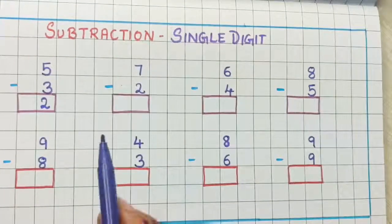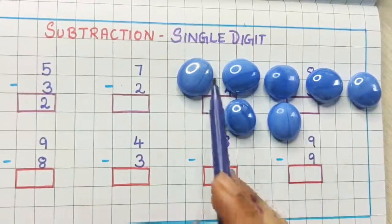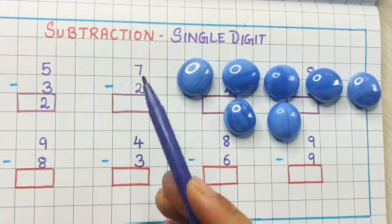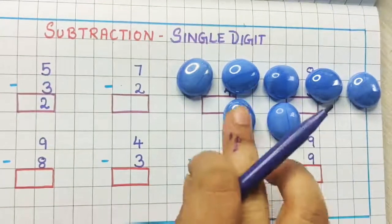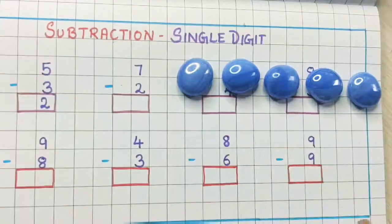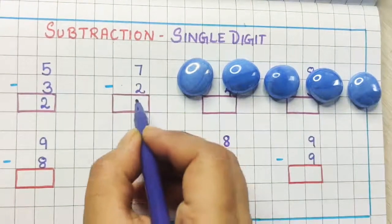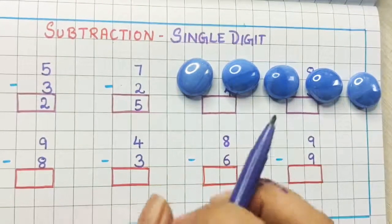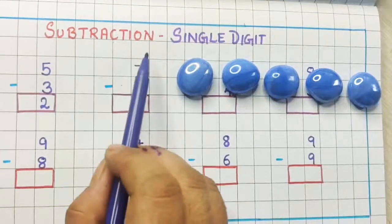Now let's see the next problem: 7 minus 2. I have 7 stones — 1, 2, 3, 4, 5, 6 and 7. Minus 2 means I am removing 2; I am giving 2 to someone else. So I am removing 2 stones. Now how many are left? 1, 2, 3, 4 and 5. So the answer is 5. In subtraction the answer always decreases because we are removing something — to do less or to remove something is called subtraction.